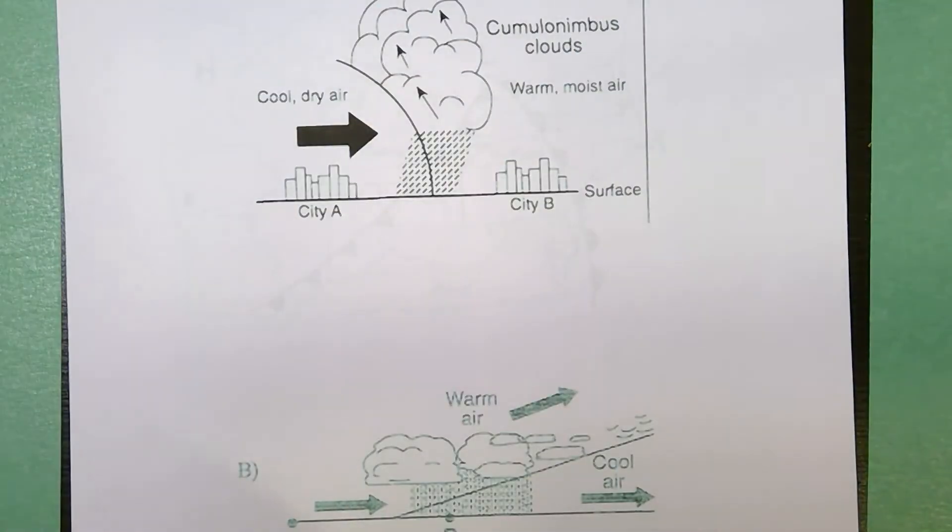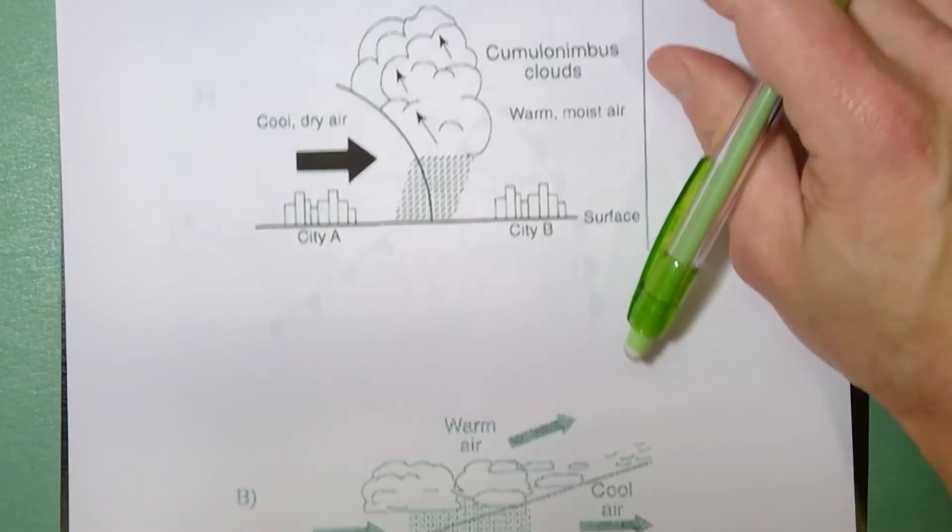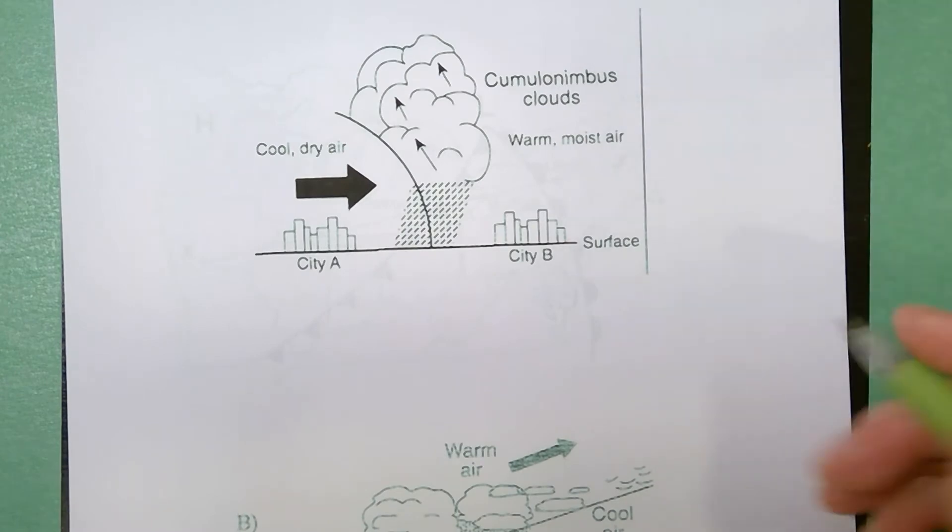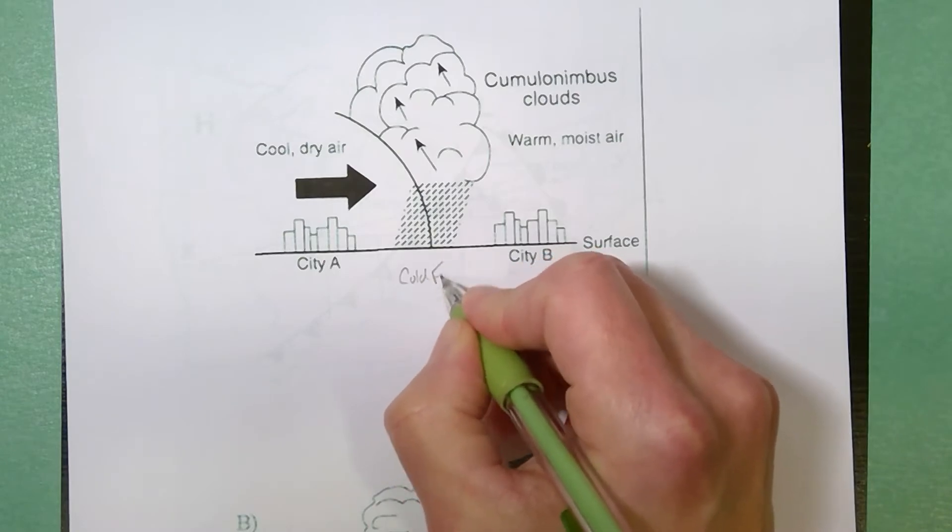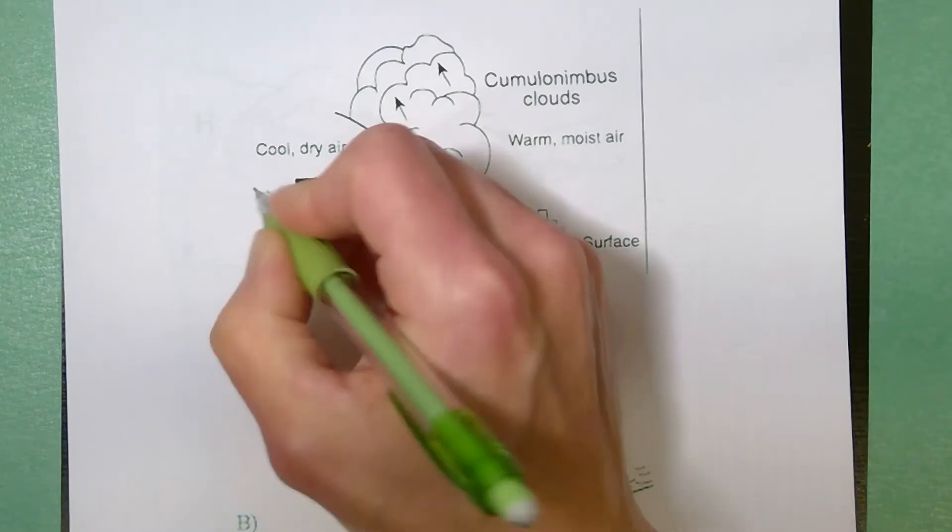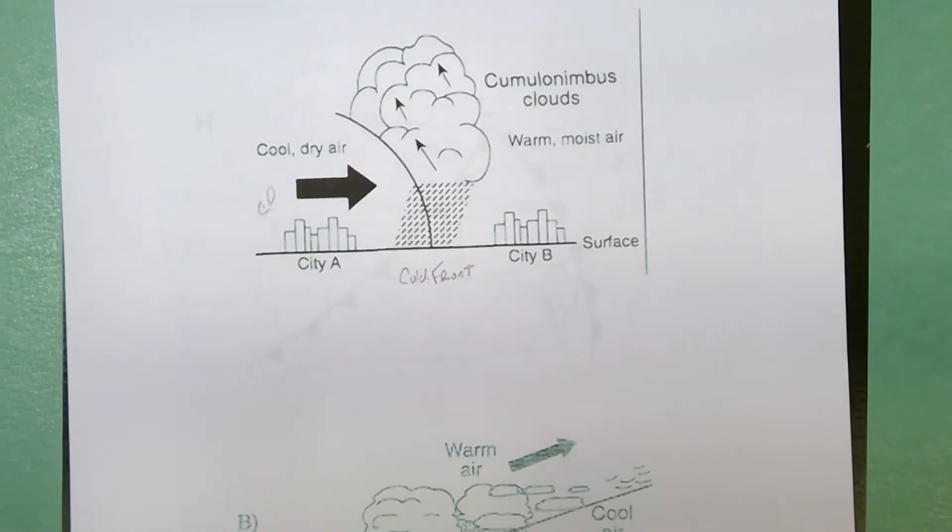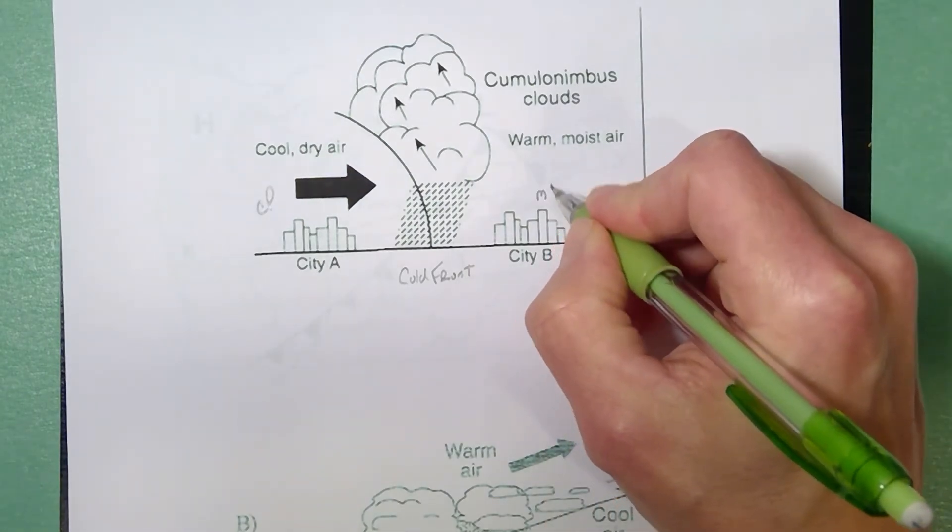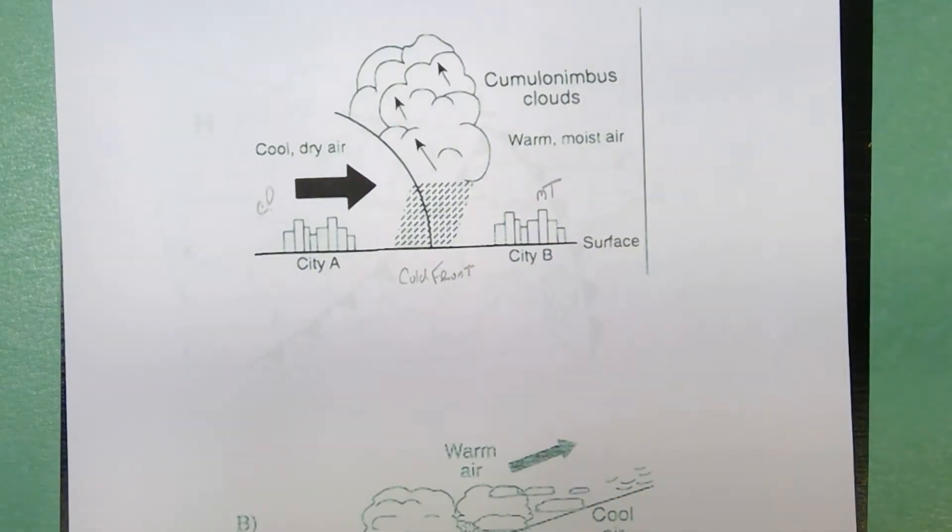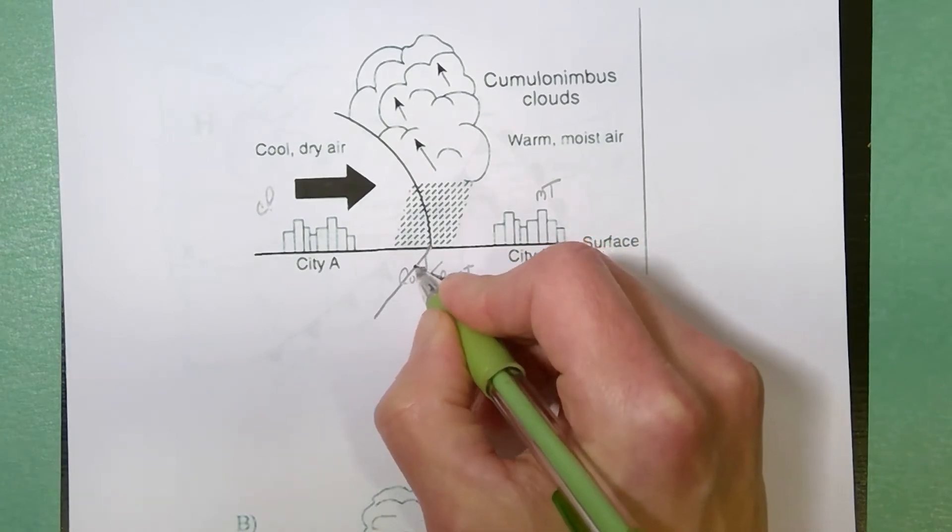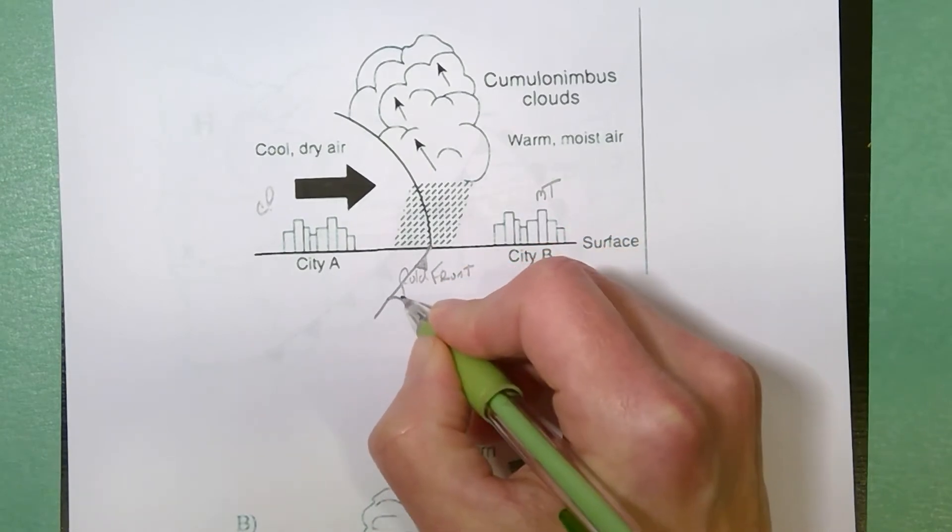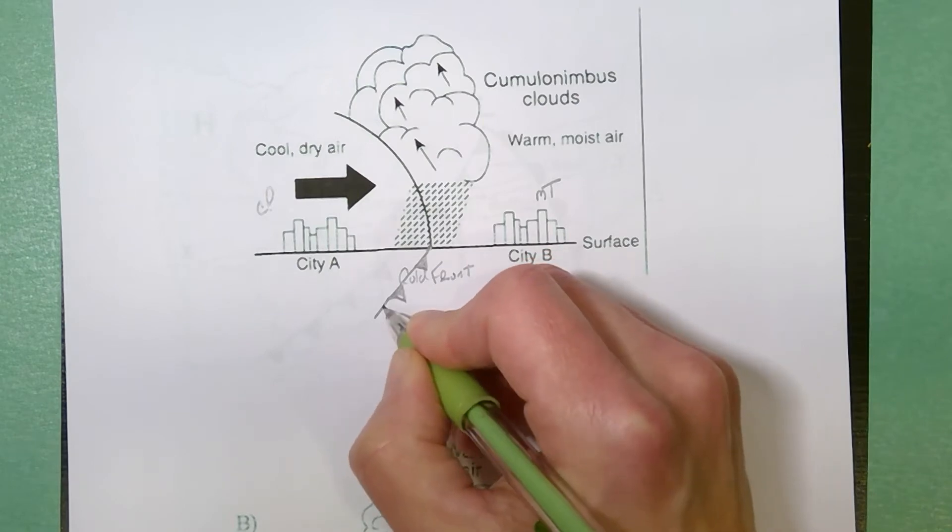More diagrams from the earth science regents exam. At the top this one with city A and city B is definitely a cold front. This would be a continental polar air mass pushing into a maritime tropical air. This point on the surface would be where the line is shown on your weather map.